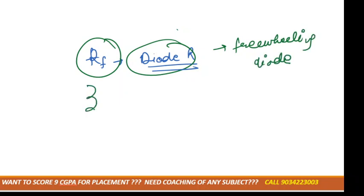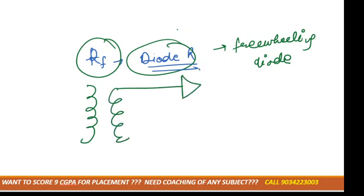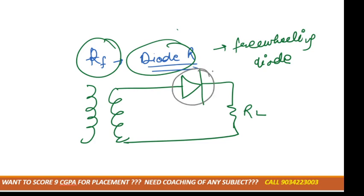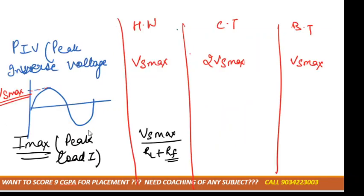Why is it called a freewheeling diode? Suppose we have a transformer connected with the diode and a load resistance. There is some amount of resistance present in the diode itself, which they denote by RF — the freewheeling diode resistance. So if we add the total resistance, it would be RF plus RL.